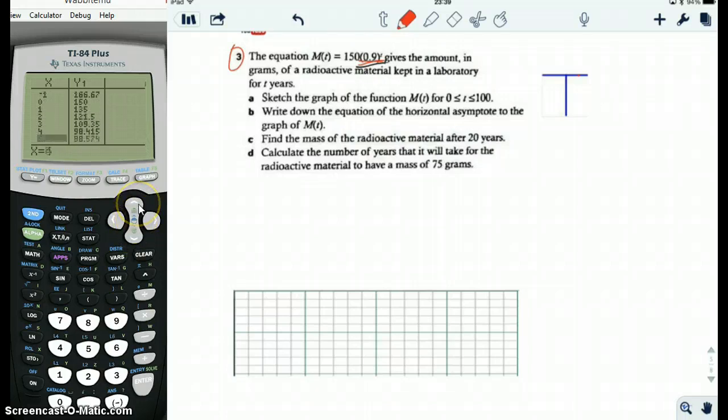Okay, there we are. That makes sense, right? At x equals 0, at 0 years, the quantity of radioactive material is 150, because the multiplier at the front of the exponent is 150. So when t equals 0, it makes sense that you have 150 times 0.9 to the 0. Remember, anything to the 0 power is 1, so that's just equal to 150.